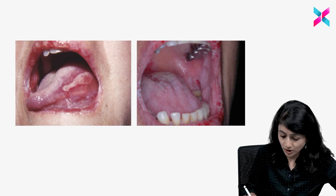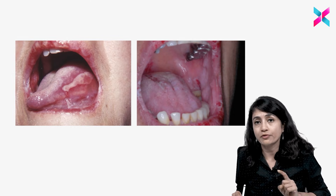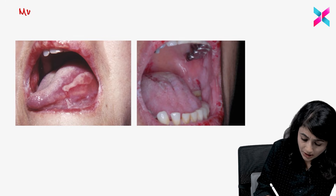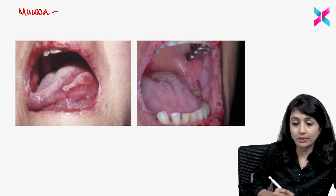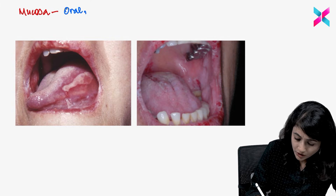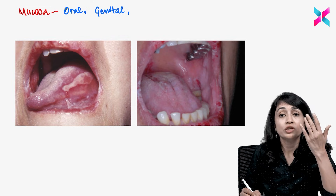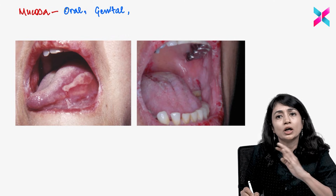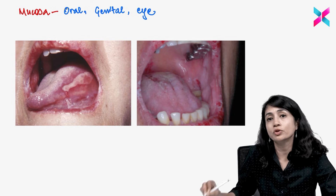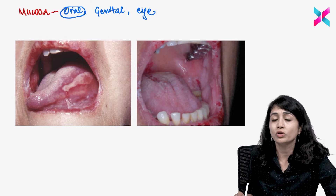How does a patient present to us? I have put mucosa first because mucosal involvement, as I told you, is present in almost 100% of cases. What all mucosa may be involved? In mucosa, I can see oral mucosa, genital mucosa — it can be vaginal mucosa, rectal mucosa — everything can be involved. You can also have eye involvement; any of the mucosa may be involved. But the most common involvement is of oral mucosa.